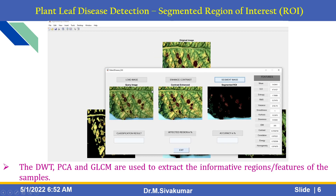After choosing the cluster 2 image, the output shows the segmented image with the segmented ROI. Now, we can employ DWT, PCA, and GLCM to extract the informative regions or features of the input samples.